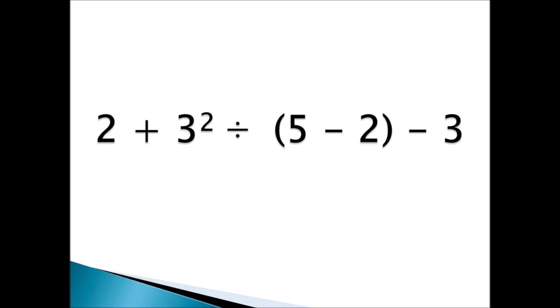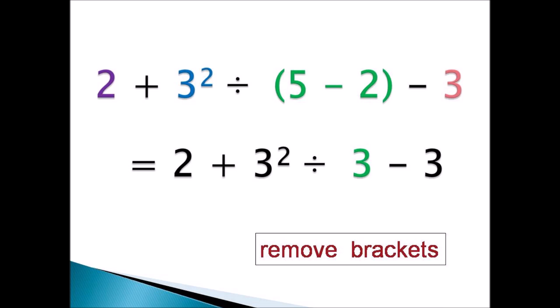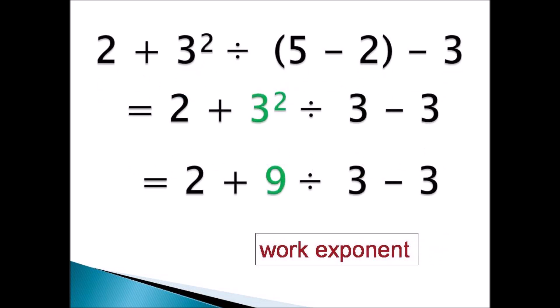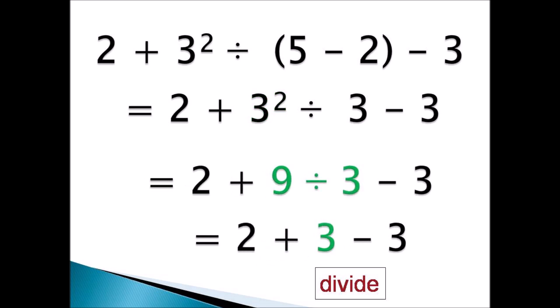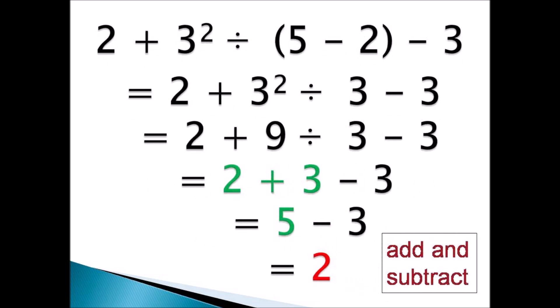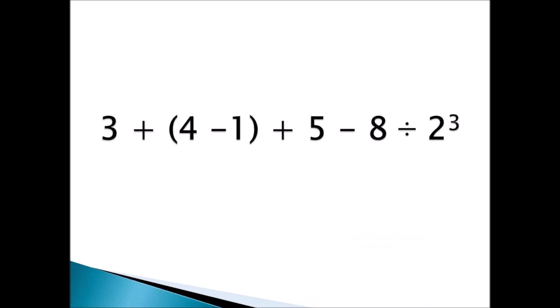Here's a hard one: 2 plus 3 squared divided by, in brackets, 5 take away 2, then take away 3. First, remove the brackets — 5 take away 2 is 3. Next, work the exponent — 3 squared is 9. Then divide before you add or subtract — 9 divided by 3 is 3. Finally, add and subtract: 2 plus 3 take away 3 equals 2. The final answer is 2.